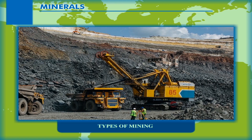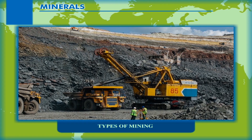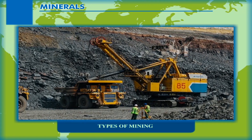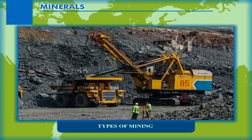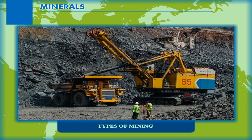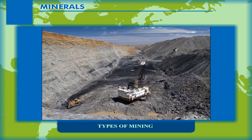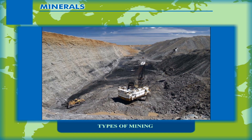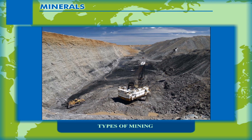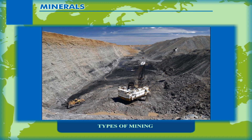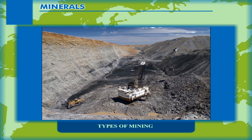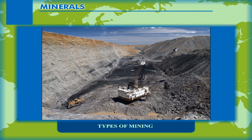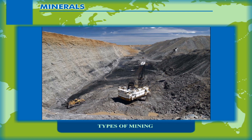Types of Mining. Metallic minerals that are found in their raw state with impurities are called ores. To extract metal content out of an ore, impurities have to be removed.